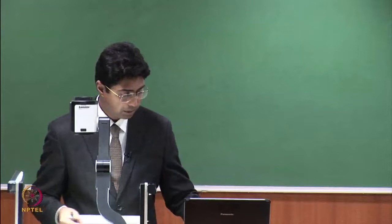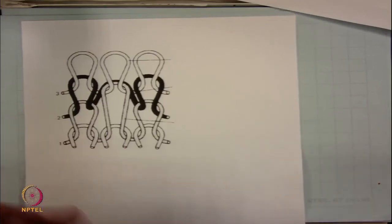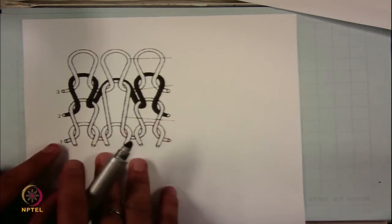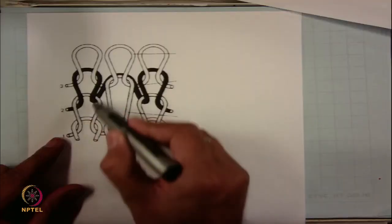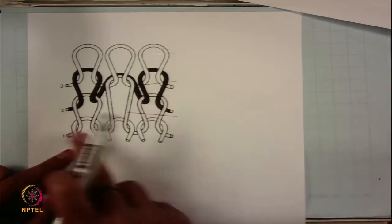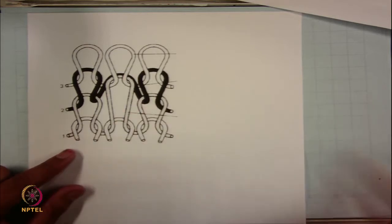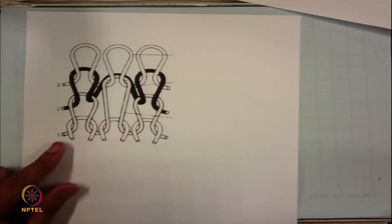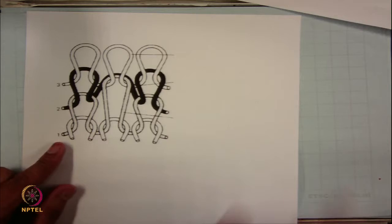Now let's move to the second example where you have tuck stitches. Again, first understand whether it is a single bed or double bed fabric. Looking at the loops in the first course, all loops are technical front side, meaning all needles are doing the same operation. Naturally, this fabric is being formed on a single bed, so it is a single jersey fabric.